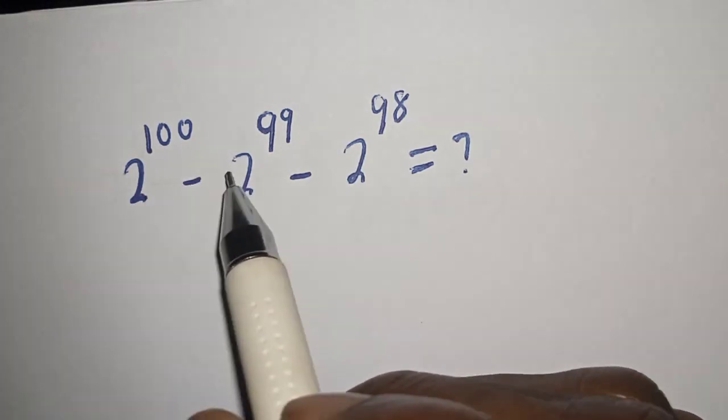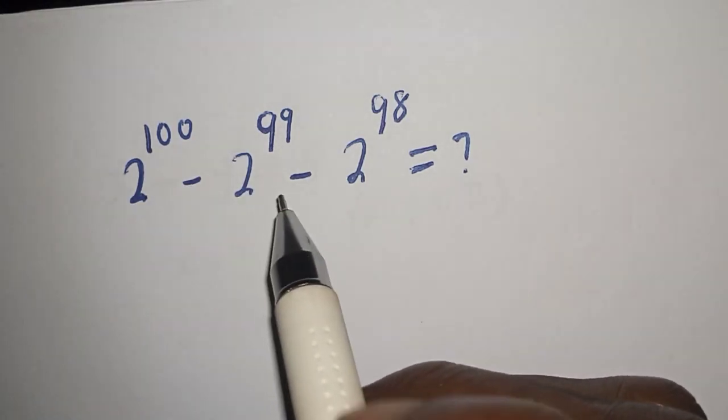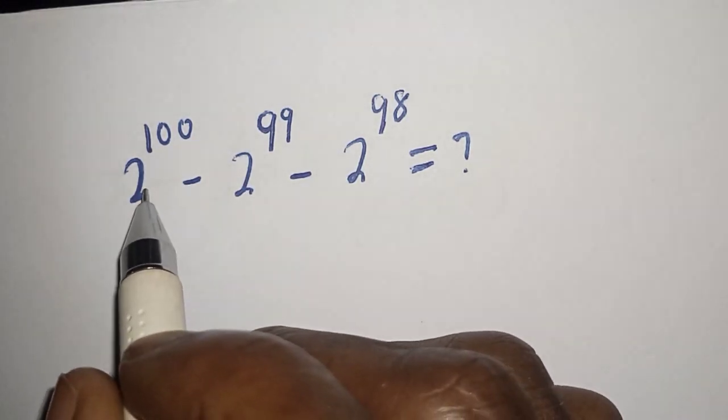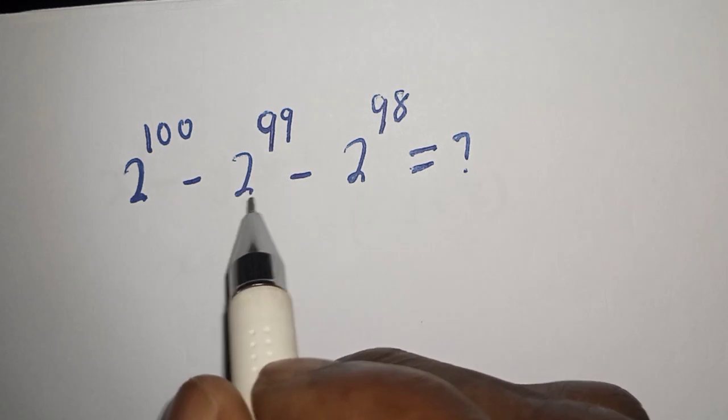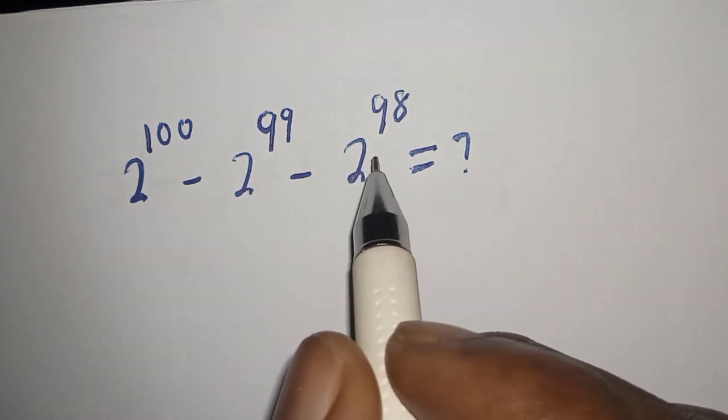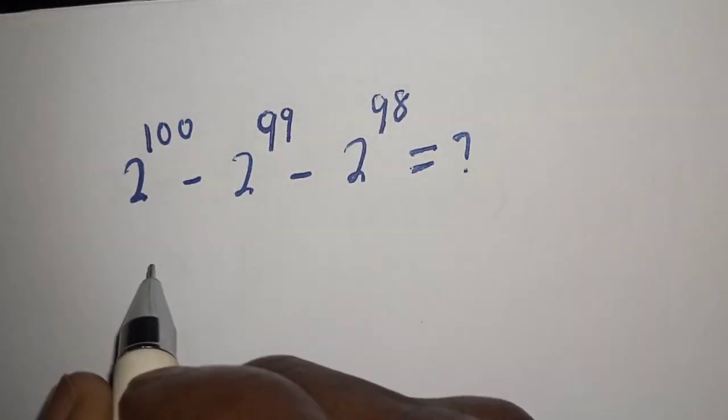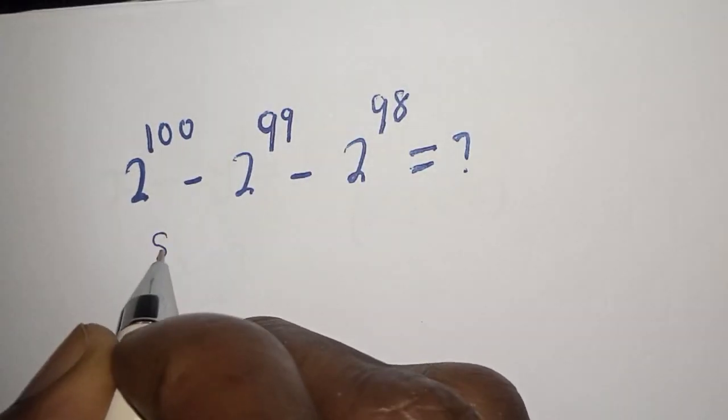Hello, how to simplify this nice math problem. 2 raised to power 100 minus 2 raised to power 99 minus 2 raised to power 98 is equal to what solution?